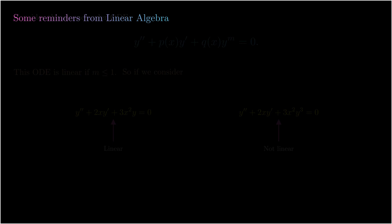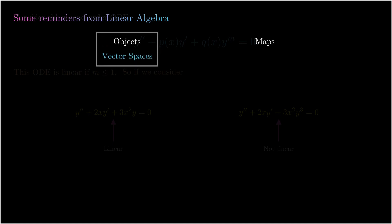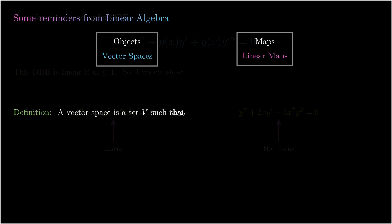In linear algebra, the objects that we study are vector spaces, and the maps between them are linear maps. Recall that a vector space is a set V such that if we have two vectors u and v in this vector space, then the sum of them is also a vector in this vector space — if u and v are in V, then u + v is in V. This is referred to as vector addition.